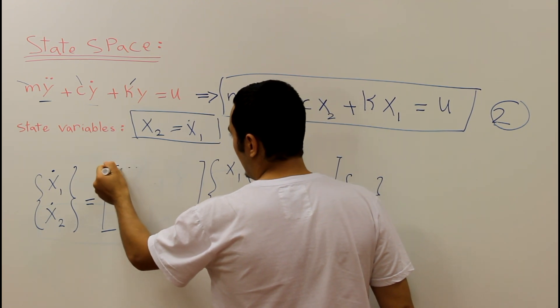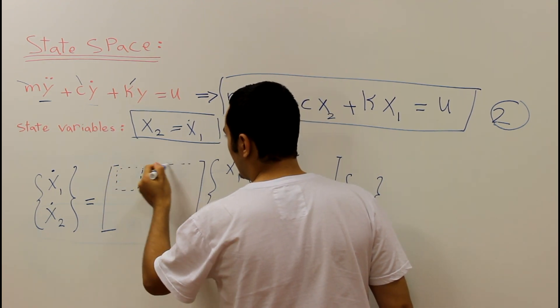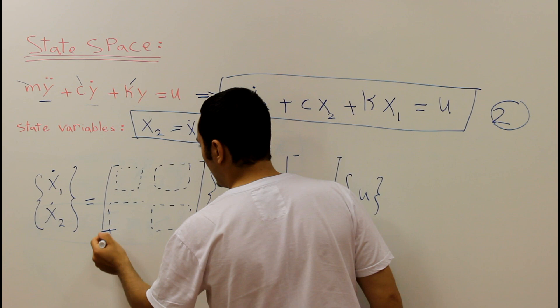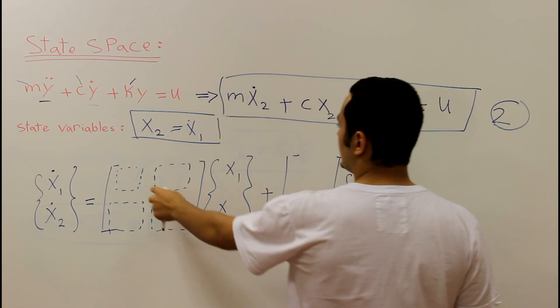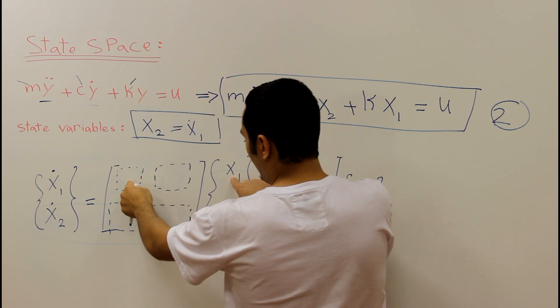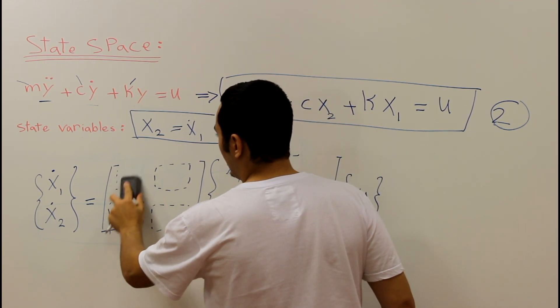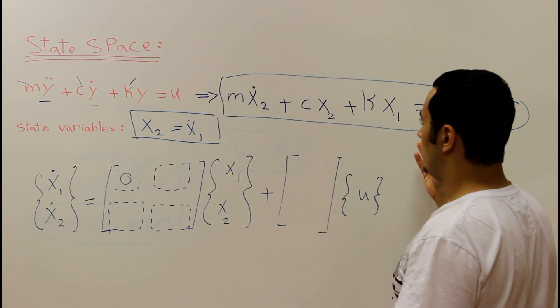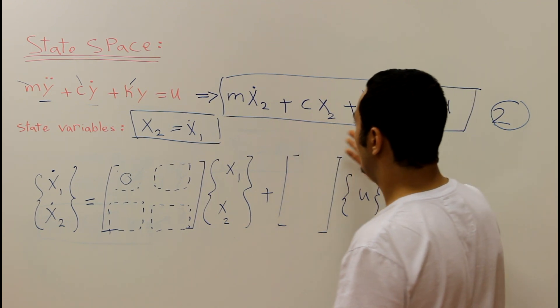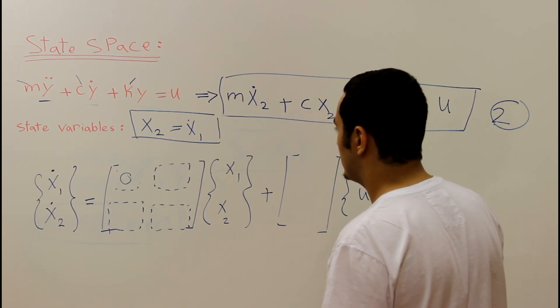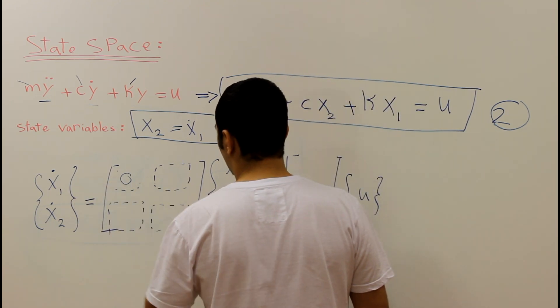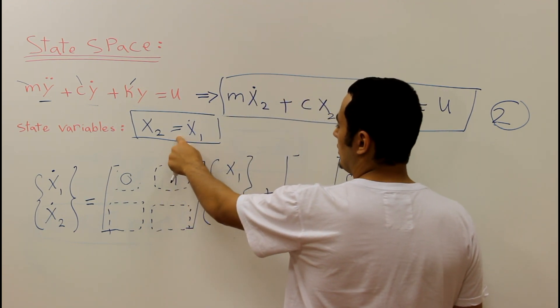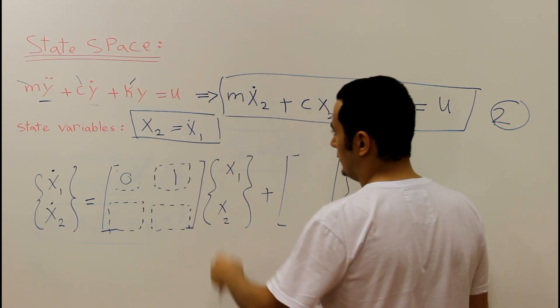The first space refers to x1 and x1 in terms of x1 dot is zero. We cannot see any x1 in here that has a relation with x1 dot. x1 dot in terms of x2 is one as we can see in this equation, x1 dot equal x2 which is one.